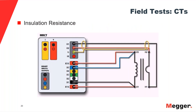Then we move on to insulation — a really important test based on what we saw in the failure data earlier. Making sure that the dielectric is still in good working condition, or detecting early signs of degradation in the CT. Typically for insulation resistance testing on CTs, we perform three different measurements: primary to secondary, primary to ground, and secondary to ground. This can be performed either with an instrument specifically made for CT testing or with simple insulation resistance testers.